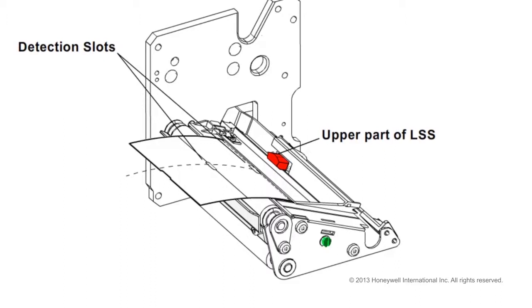The LSS can be moved laterally from the inner edge of the media path to 50 millimeters, or 1.96 inches, outward, which corresponds to the center line of full-width media.